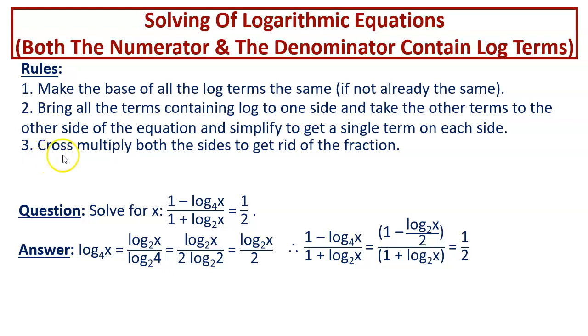Rule number 3 says, because it is a fraction, therefore cross multiply both the sides to get rid of the fraction.